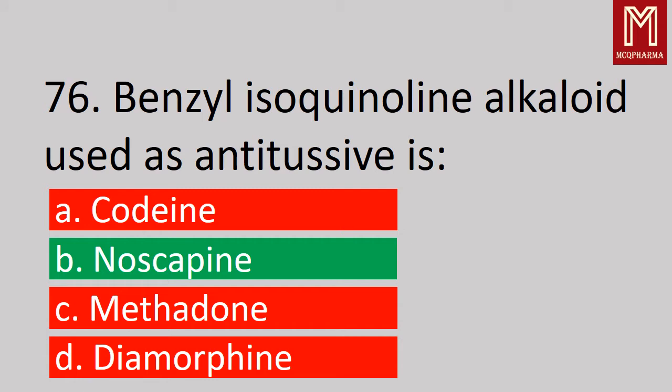Next, benzylisoquinoline alkaloid used as antitussive is — correct answer, Option B: Noscapine. Noscapine is a non-narcotic alkaloid present in opium.